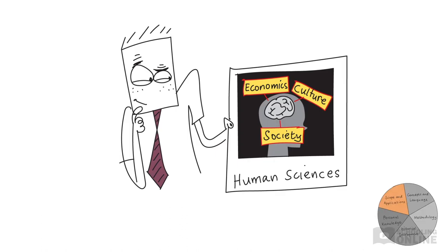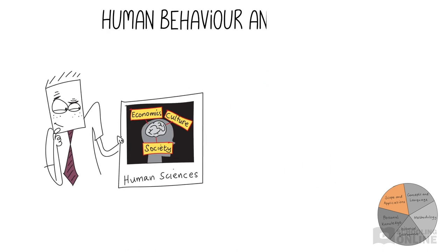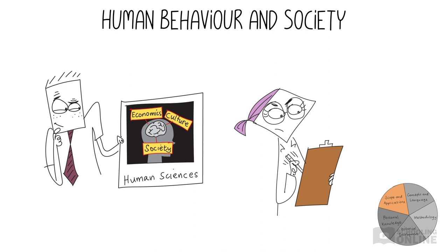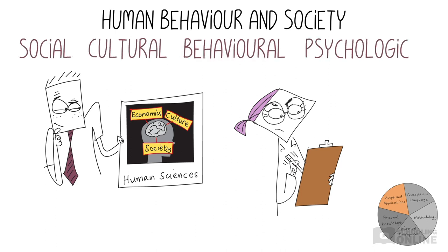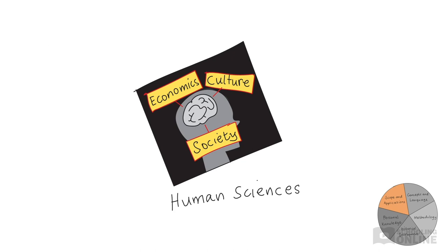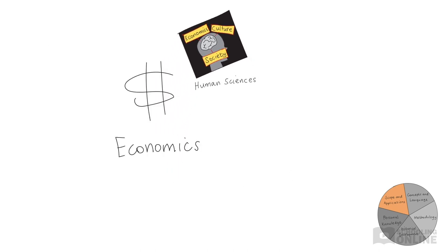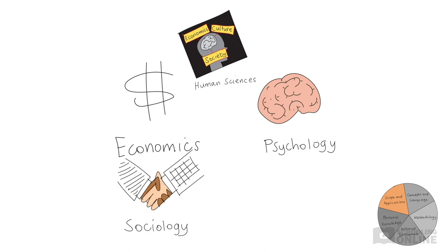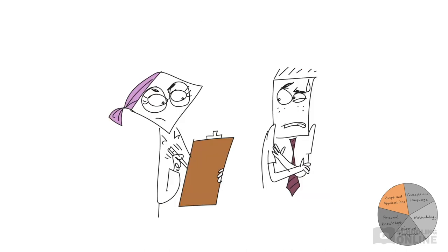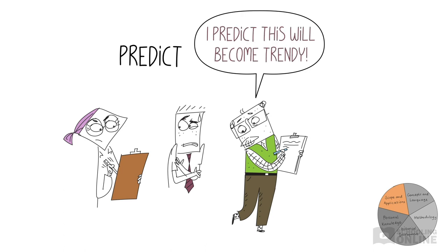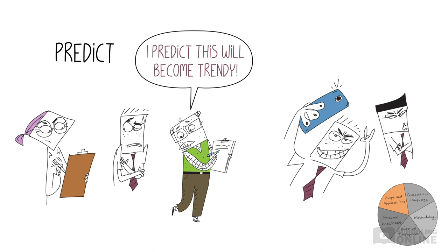The scope and applications of the human sciences relate to human behaviour and society. Academics in the human sciences study the social, cultural, behavioural and psychological aspects of humanity. The human sciences encompass a variety of subjects, ranging from economics and psychology to sociology and anthropology, which both delve into how human societies function. A lot of research in these areas aims to predict human behaviour — for example, economists might try to predict what happens when a certain product becomes trendy. Will we buy the next iPhone model if our friends buy it? This is known as herd behaviour.